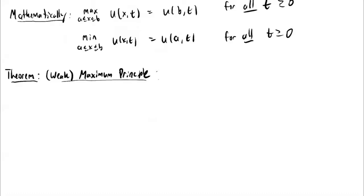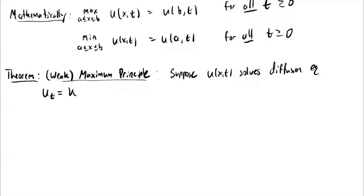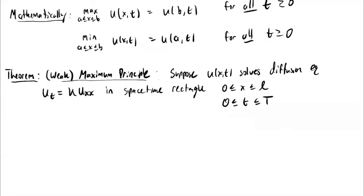Let's suppose that u of x, t solves the diffusion equation — u_t equals some constant k times u_xx — where x is on the real line. Let's specify our domain: suppose it solves the diffusion equation in the space-time rectangle where x is in some finite interval between zero and L, and t is also in some finite interval between zero and capital T. Visually this domain is a box in the x-t plane. We're assuming that u solves the diffusion equation for all points inside this domain.